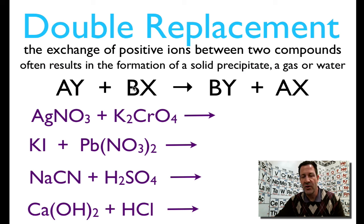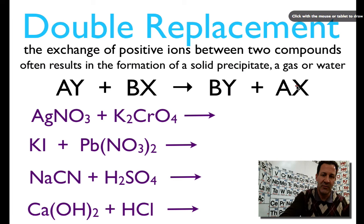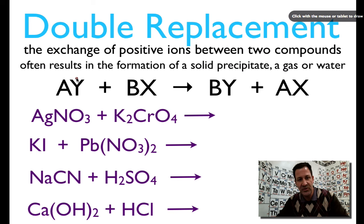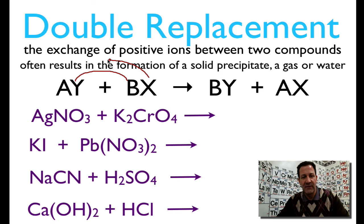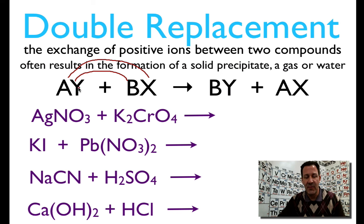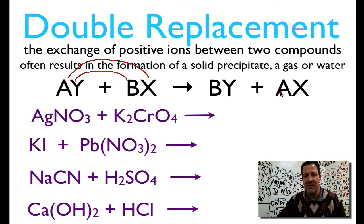Here we have the general form: we have one compound, two compounds, one compound, and two compounds. What usually happens in a double displacement reaction is the inner constituents will recombine, and then the outer constituents will recombine. So that's how you can figure out what the products are going to be. B is now going to be bonded to Y — B is our metal, so we write BY first. The outer two will recombine to give A, our metal, with X, giving AX. You can identify double replacement reactions because you have two compounds on the left side and two compounds on the right side.